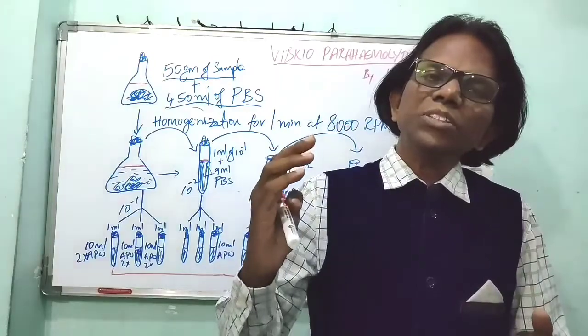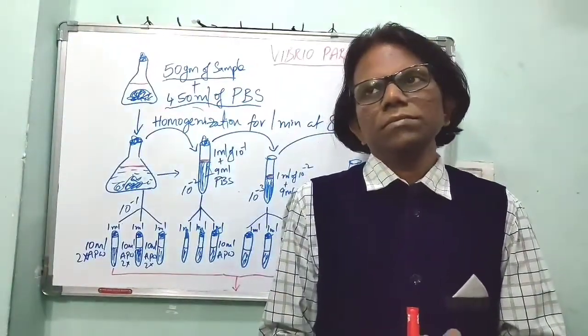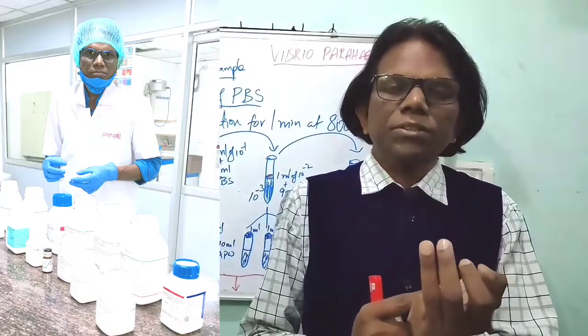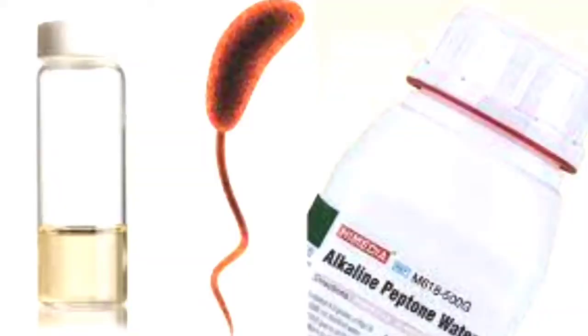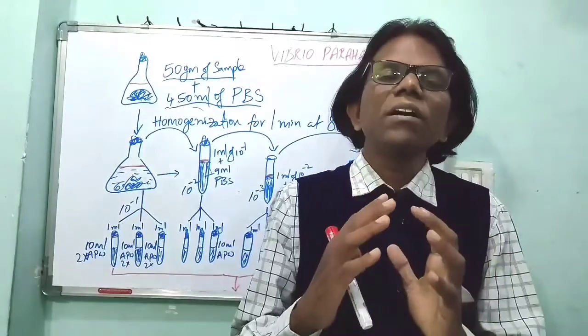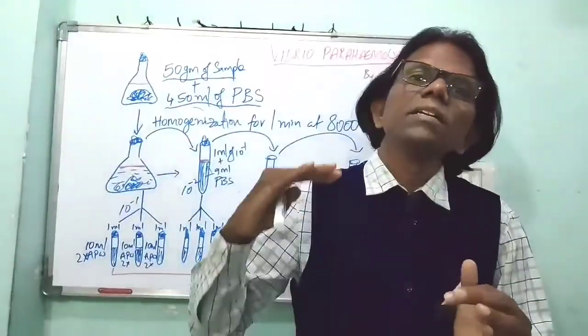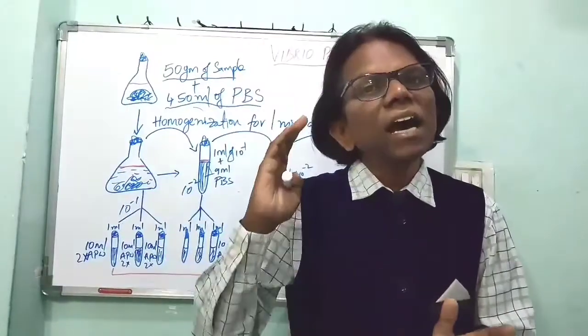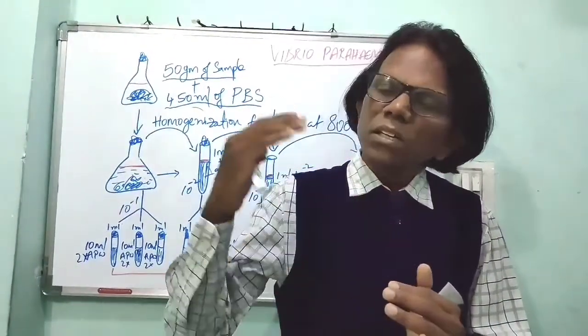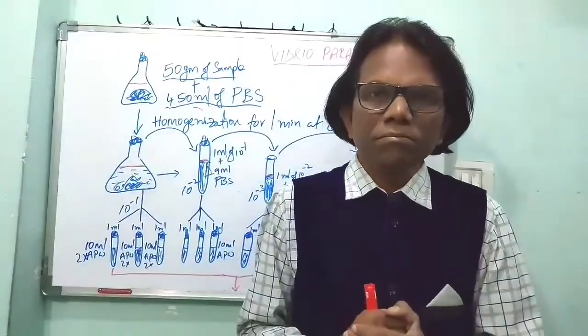Now, media required for isolation and identification of Vibrio parahaemolyticus. The first one is phosphate buffer solution as a diluent. The second one is alkaline peptone water for primary enrichment or pre-enrichment purposes. The selective agar is thiosulfate citrate bile salt sucrose agar (TCBS). And the fourth one is T1N1 - tryptone broth with 1% NaCl, tryptone broth with 0% NaCl, 3% NaCl, 5% NaCl, and 8% NaCl. To determine the halophilic ability or salt tolerance of Vibrio species, we have to add NaCl to the tryptone medium.